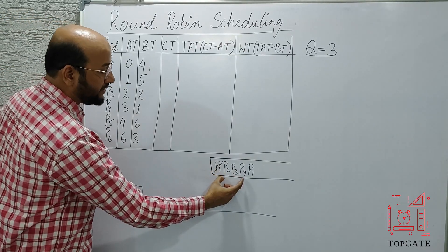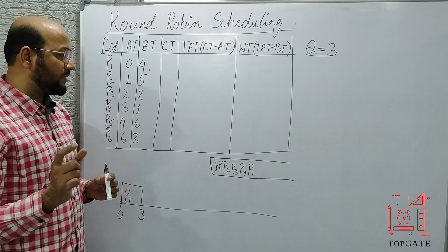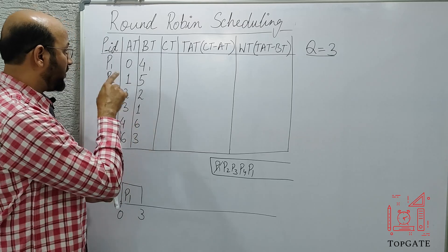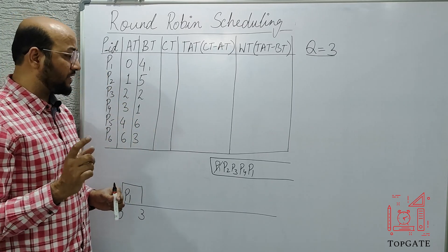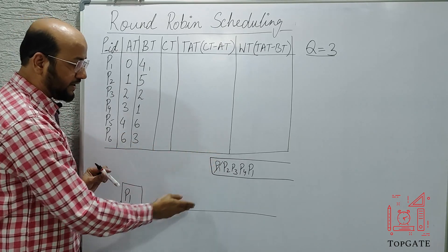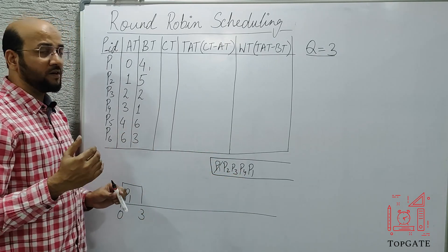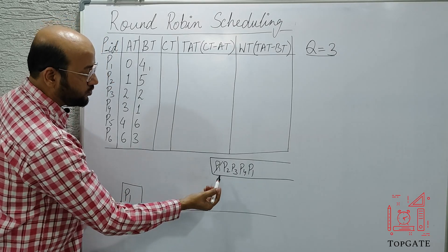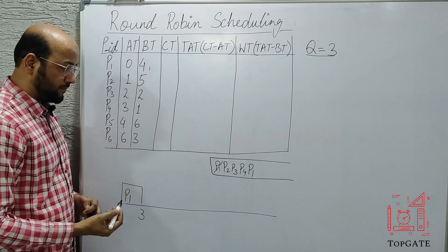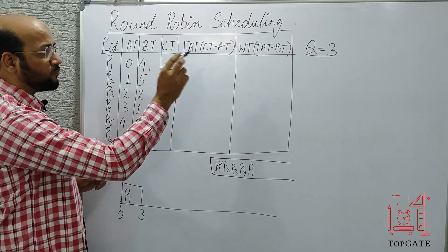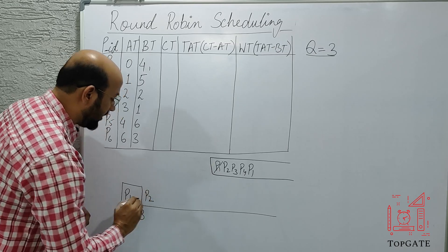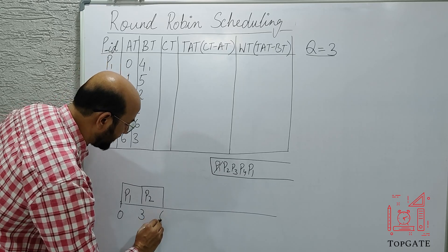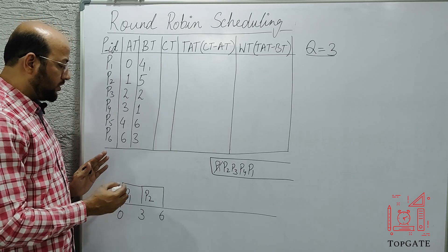The first step is seeing which processes have arrived by that time — three processes arrived so we write them. The second step is checking whether P1 has finished; since its burst time is not complete, we write P1 at the end of the ready queue. Now at the head of the ready queue we have P2. P2's requirement is 5 but the time quantum is 3, so P2 will start at three and complete its first iteration at six.